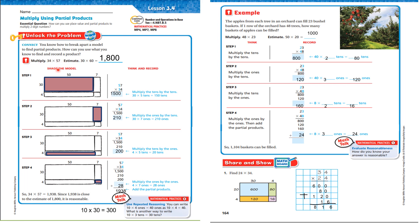So, multiply 34 times 57. Estimate: 30 times 60 is 1,800. Look at the model: they went 30 plus 4 equals 34, and 50 plus 7 equals 57. They multiplied 30 times 50, which equals 1,500. Then they took 30 again and multiplied it by 7 ones — 30 times 7 is 210.